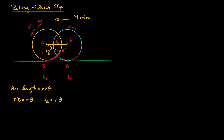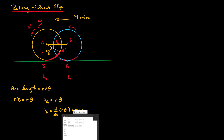We're often interested in velocities and accelerations. The velocity of point G is obtained by taking the derivative of Rθ, which is the displacement. Since R does not change — we're dealing with a rigid body — we just have dθ/dt, which gives us omega, the angular velocity. So VG = Rω.